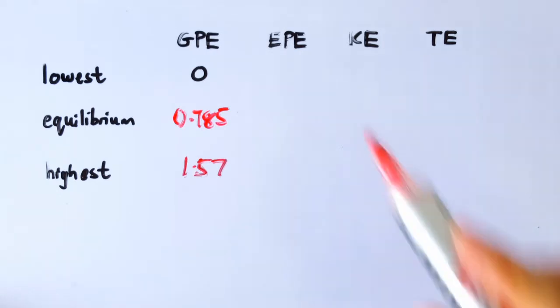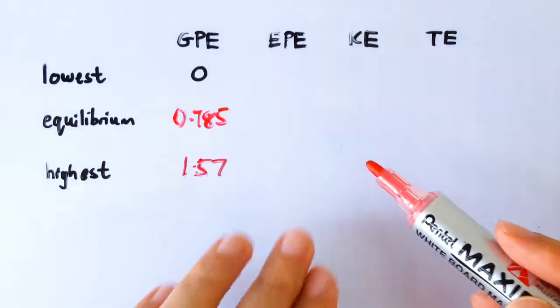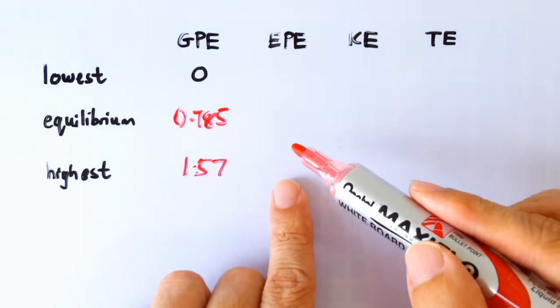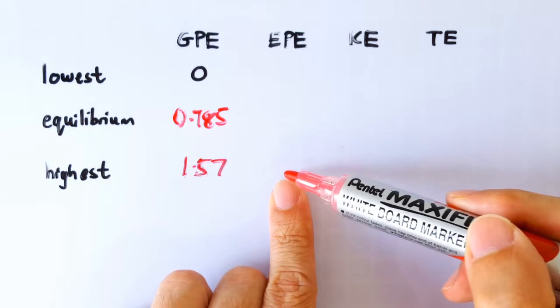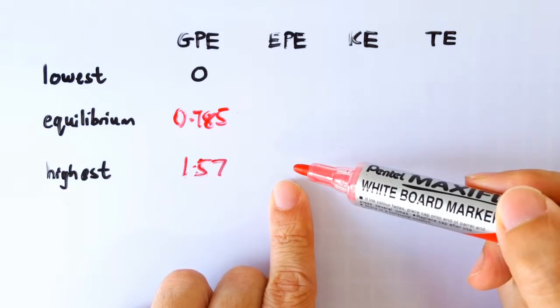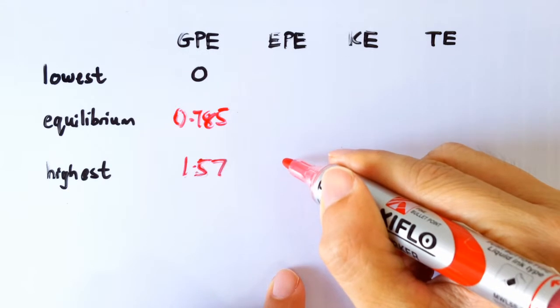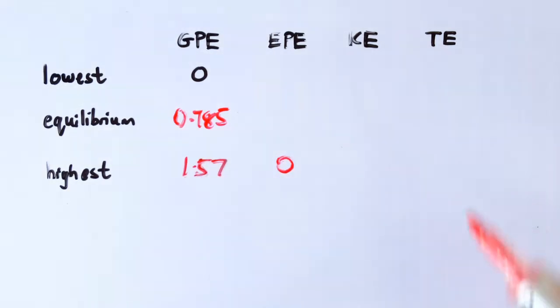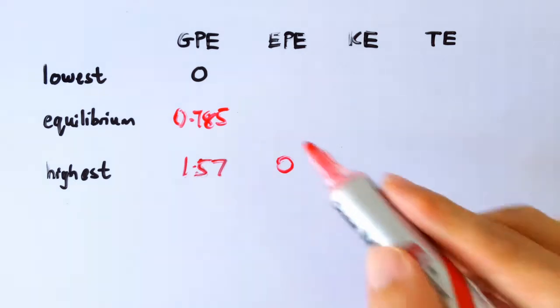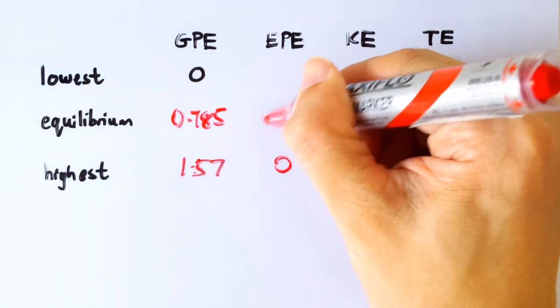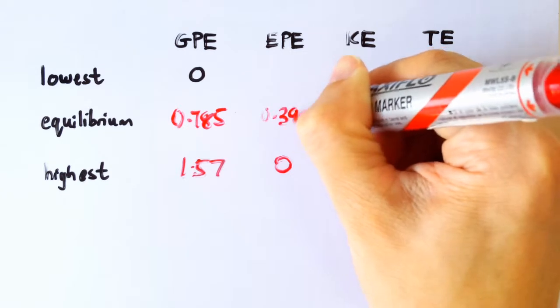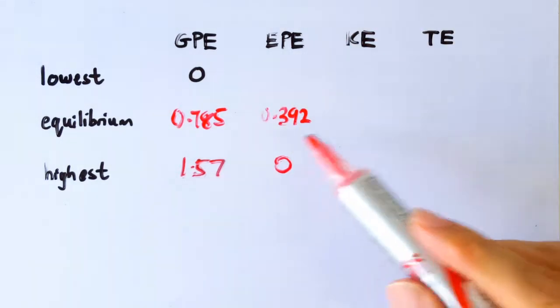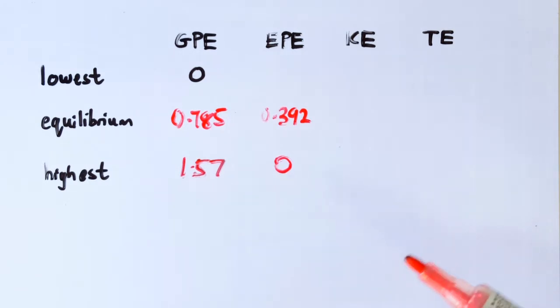Next, the EPE column. For this particular question, when the spring mass system is at the highest position, the spring is actually unstretched. It is at its natural length. So the EPE when the spring is unstretched is zero. In part B1 we have already calculated that the EPE is 0.392 joules.